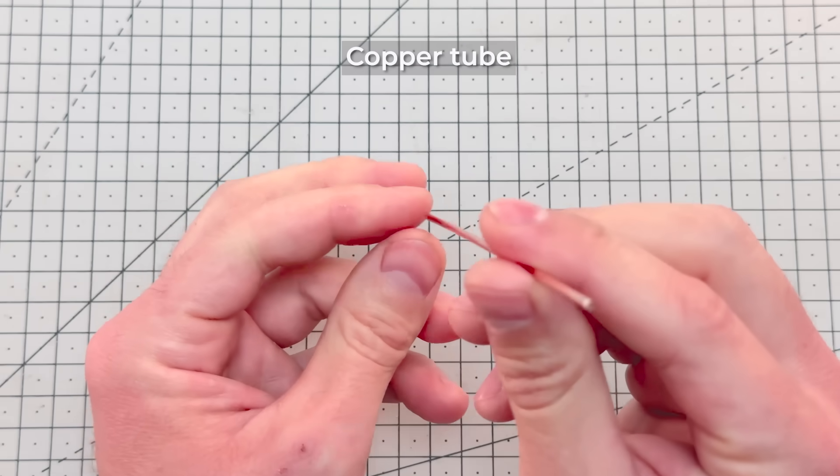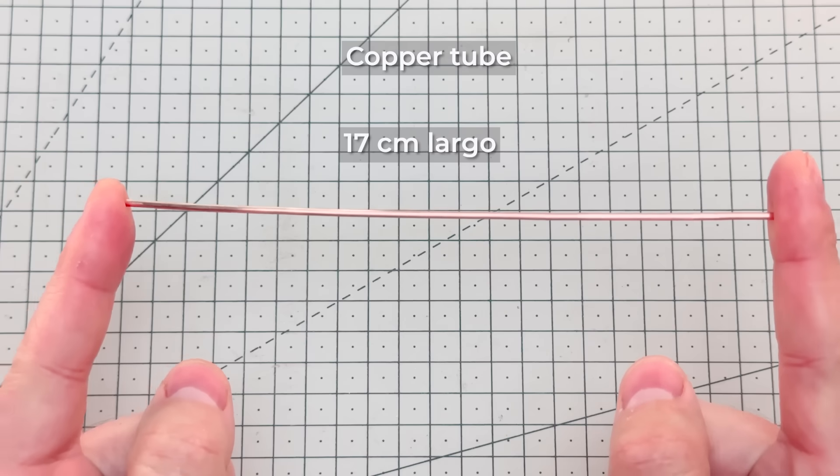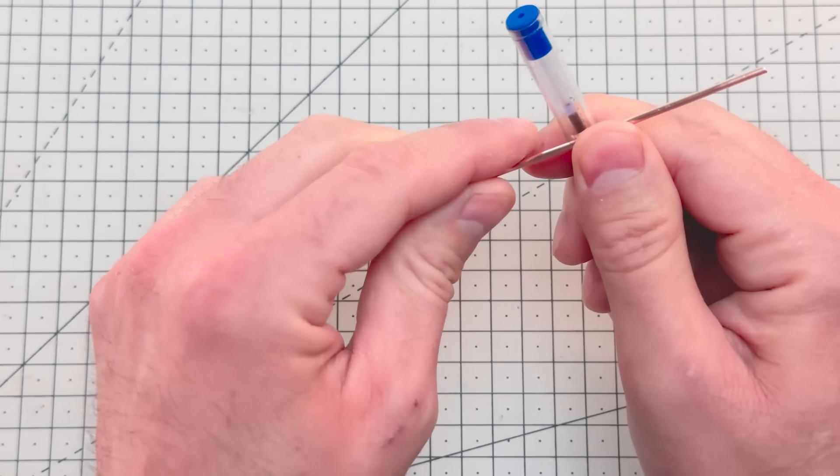Now we're going to take a copper tube called a capillary tube. This small tube will create a sudden pressure drop in the evaporator, which will produce the cooling effect.